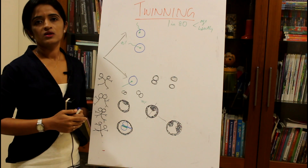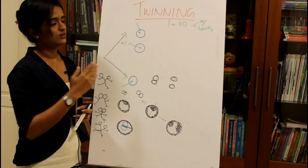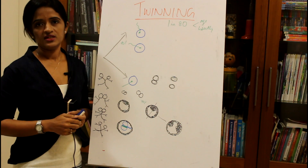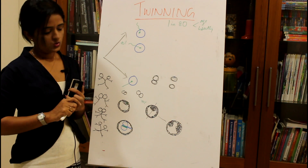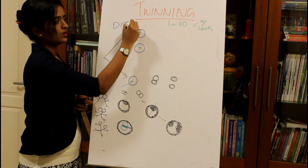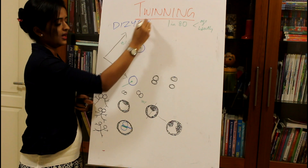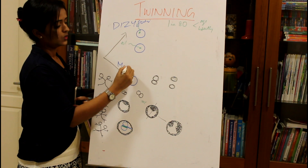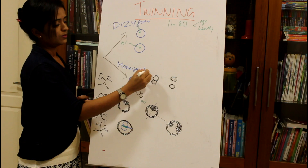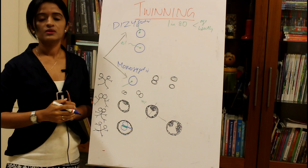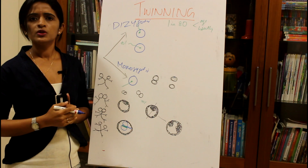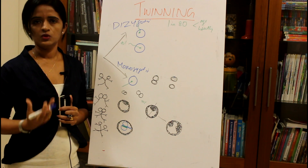There are two major varieties of twinning. Twins can be broadly classified as dizygotic twins and monozygotic twins. These are the two broad classifications of twins.